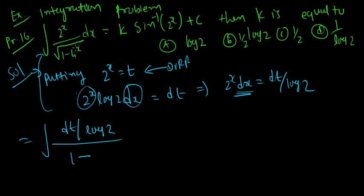1 minus 4 raised to x. 4 raised to x equals 2 raised to x squared, so this equals 1 minus t squared.